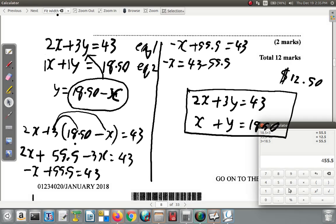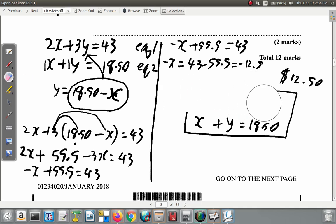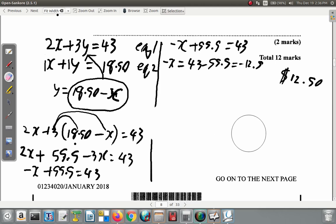So negative X is equal to 43 minus 55.5. Remember, you'll subtract 55.5. And then what you would have is 43 minus 55.5, and you'll get negative 12.5. That's what you would get here. Equals negative 12.5. So right here, you'll say negative X is negative 12.5. So what is positive X? Positive X must be 12.5.